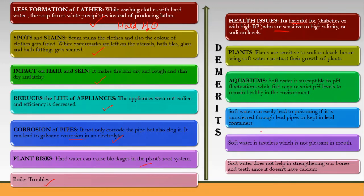Fluctuation in pH can harm or kill fish, and soft water is susceptible to pH fluctuation, so it cannot be used in aquariums — wild fish require a strict pH level. Regarding lead poisoning, soft water flowing through lead pipes or lead containers can easily lead to poisoning, whereas this does not happen as readily with hard water due to the protective scale coating. Soft water is also tasteless and does not help in strengthening bones, as it lacks calcium and magnesium.